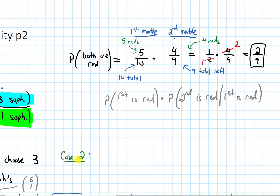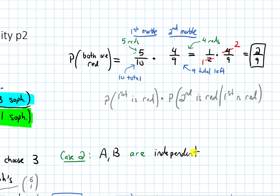Now for case two: what if A and B are independent? If they are independent, then the probability of A intersected with B equals the probability of A times the probability of B. That comes from the definition of independence. Let's look at an example.